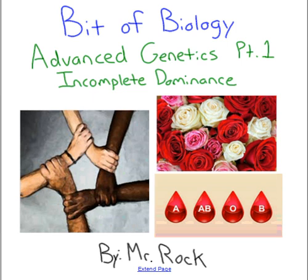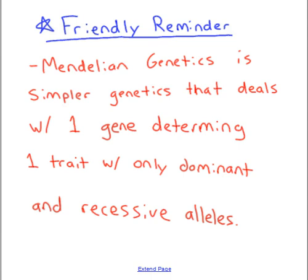This is A Bit of Biology with Mr. Rock, and today we are going to be talking about advanced genetics — more specifically, incomplete dominance. This video is called advanced genetics, but it is advanced in comparison to Mendelian genetics, which is what we've been learning about for the last week. It is very simple in the sense that one gene makes up one trait.